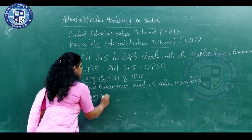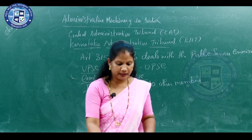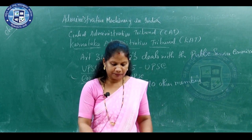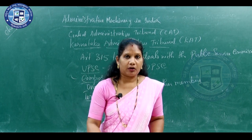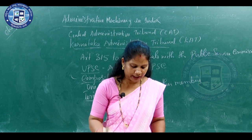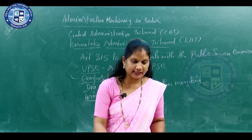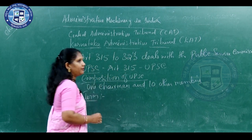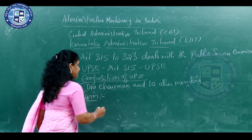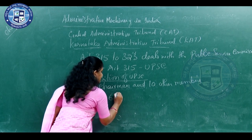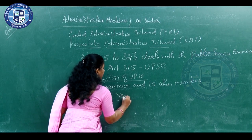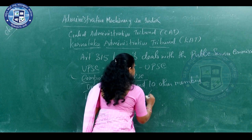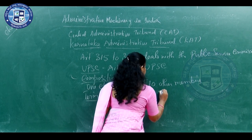The chairman and 10 members of UPSC hold office for a period of 6 years or till they attain the age of retirement, that is 65 years, whichever comes earlier.